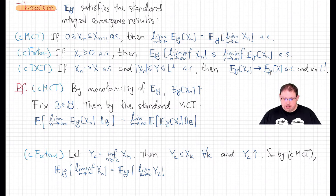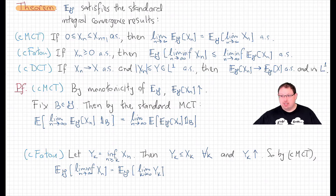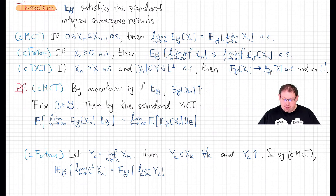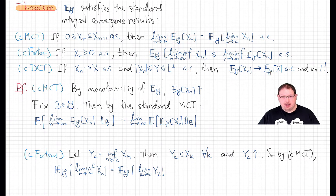Their statements are exactly the same as the classical theorems, except they all have 'almost surely' at the end, because the conditional expectation is a random variable, not a constant. The conditional monotone convergence theorem says: if X_n is a non-decreasing almost sure sequence of measurable random variables, then the conditional expectation of the limit equals the limit of the conditional expectations, conditioned on any sigma field G, almost surely.